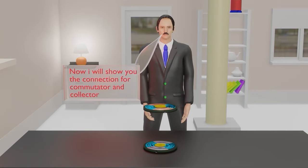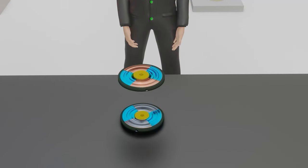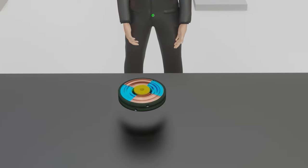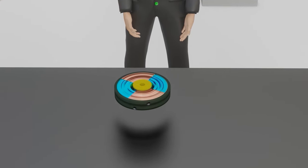Now, we will see how this commutator and collector are connected in a dynamo electric machine. First, we will see the connections for an armature with a single coil having two free ends.